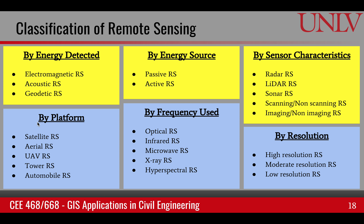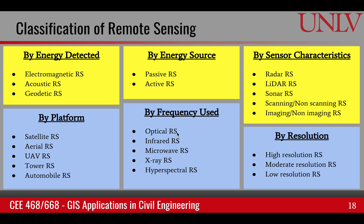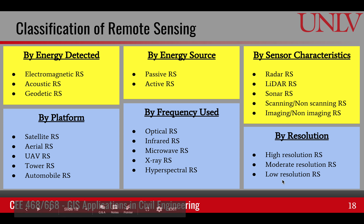We can also classify based upon platform. Satellites operate in space; aerial remote sensing deals with aeroplanes equipped with sensors; unmanned aerial vehicles are lower autonomous vehicles. Then we have tower remote sensing and automobile remote sensing. We can also classify based upon frequency used — for example, optical, infrared, microwave, x-ray, and hyperspectral remote sensing. Lastly, remote sensing can be classified based upon resolution: high resolution has more detail versus moderate resolution, and low resolution has the lowest detail.